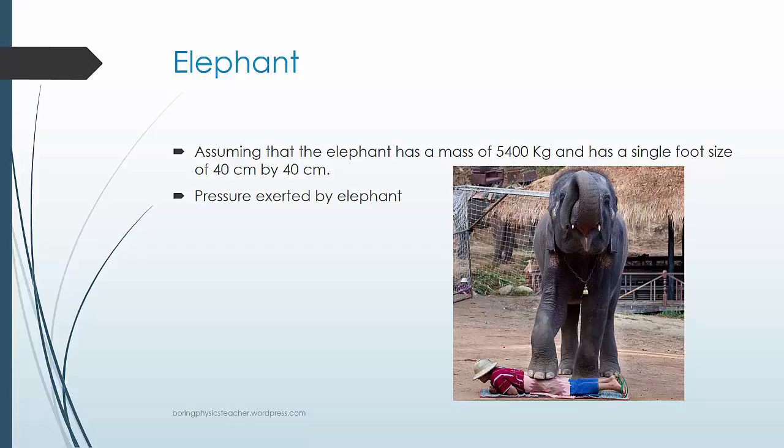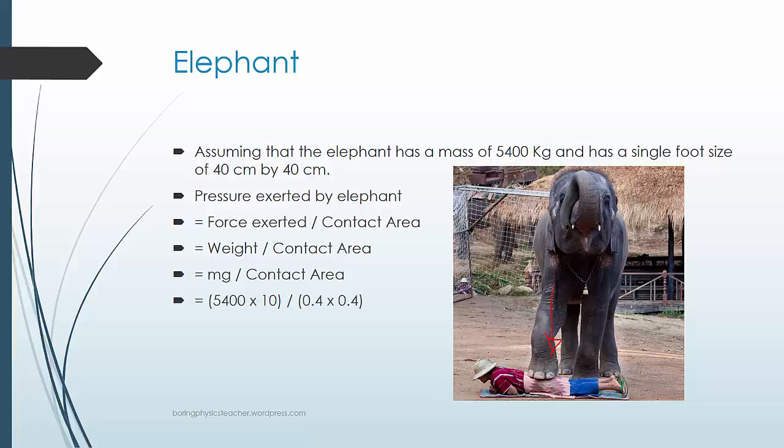Pressure exerted by elephant is force exerted over contact area. The force exerted in this case, let's just assume that it's the weight of the elephant that is pressing down. So weight is equal to mg, and the area is the feet. In this case, just substitute in the value.